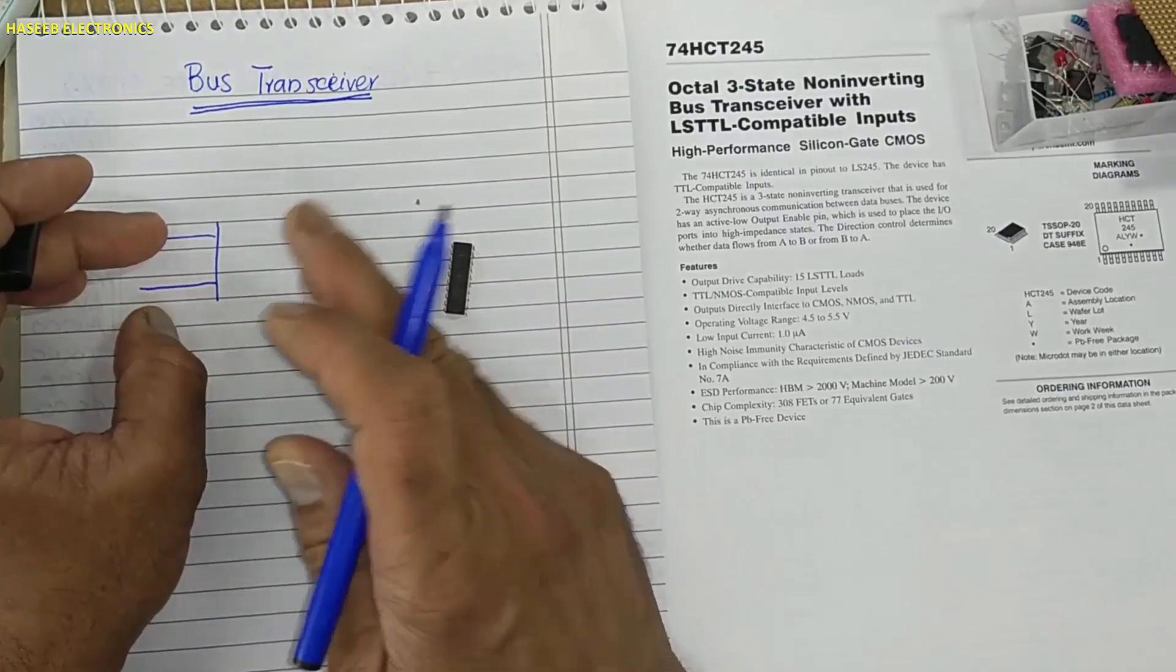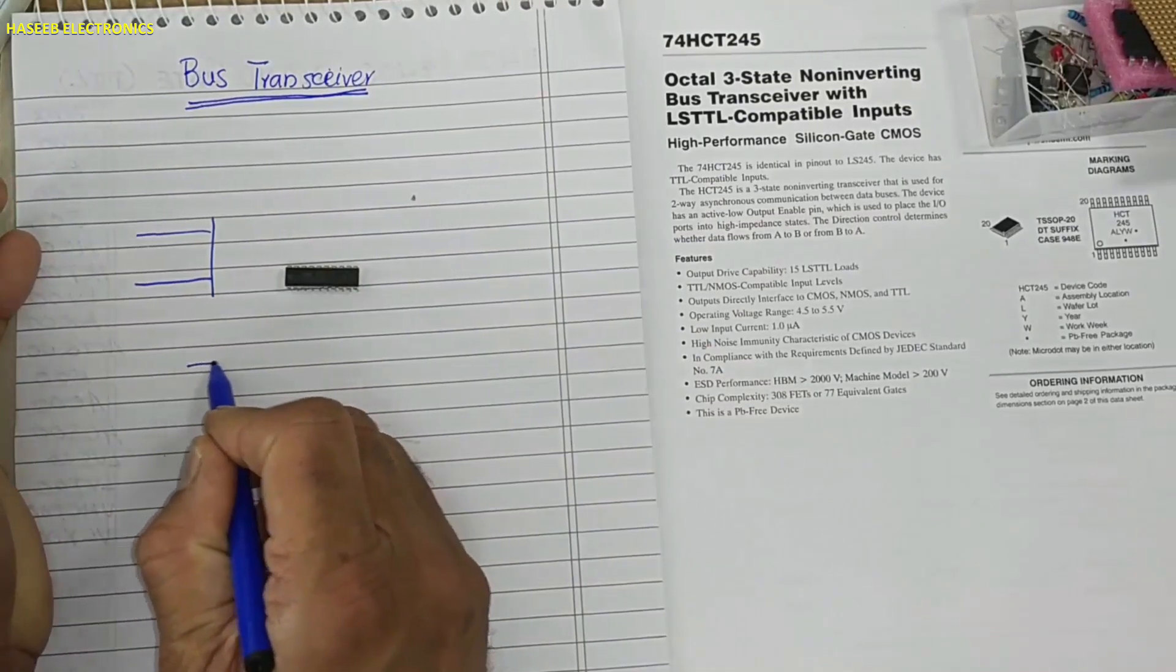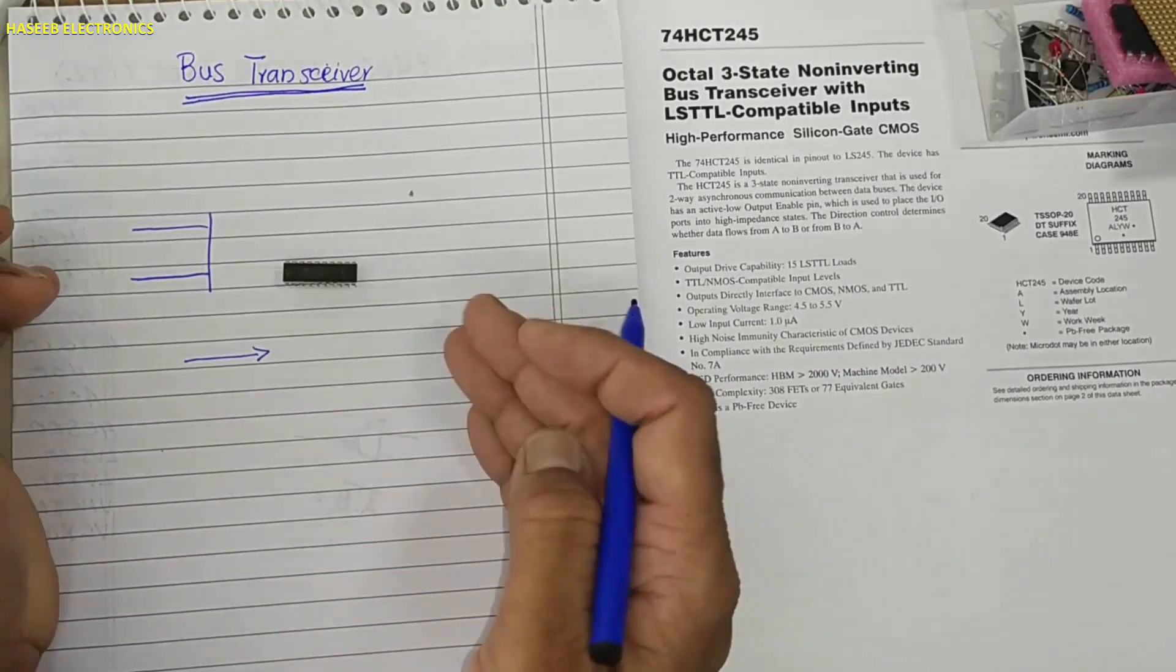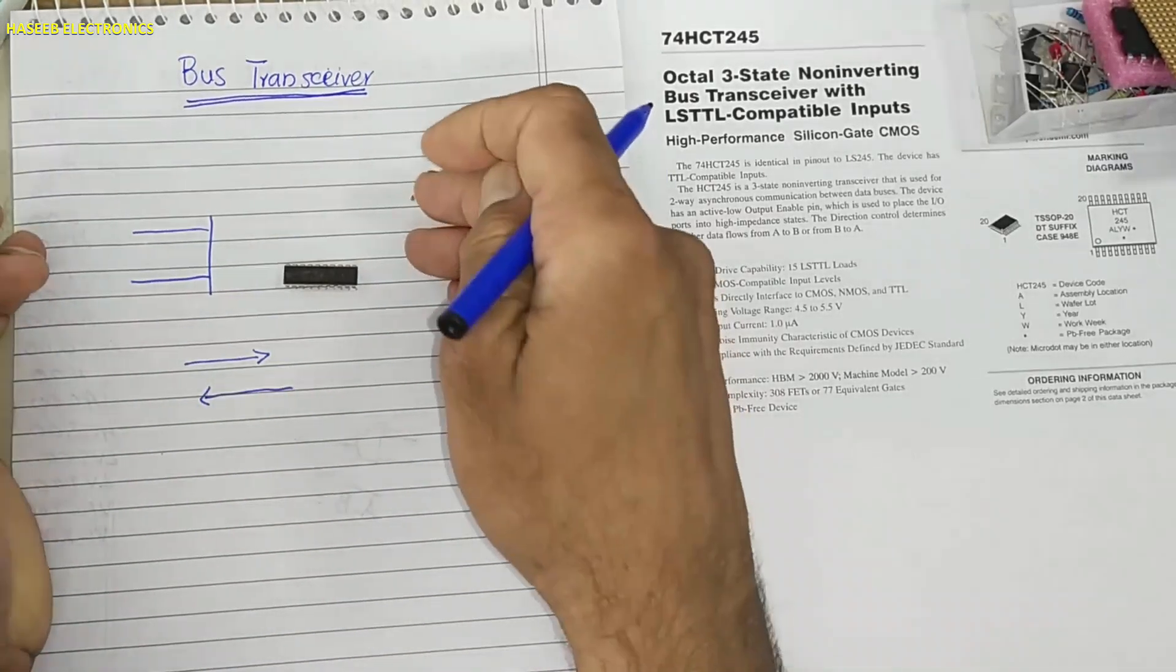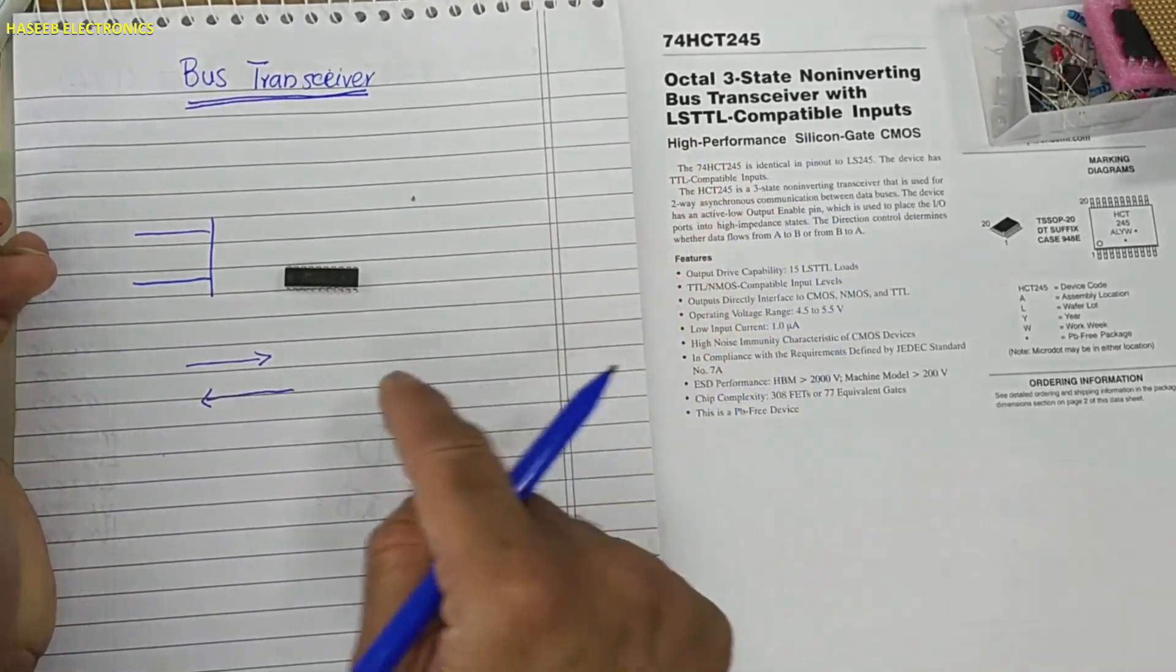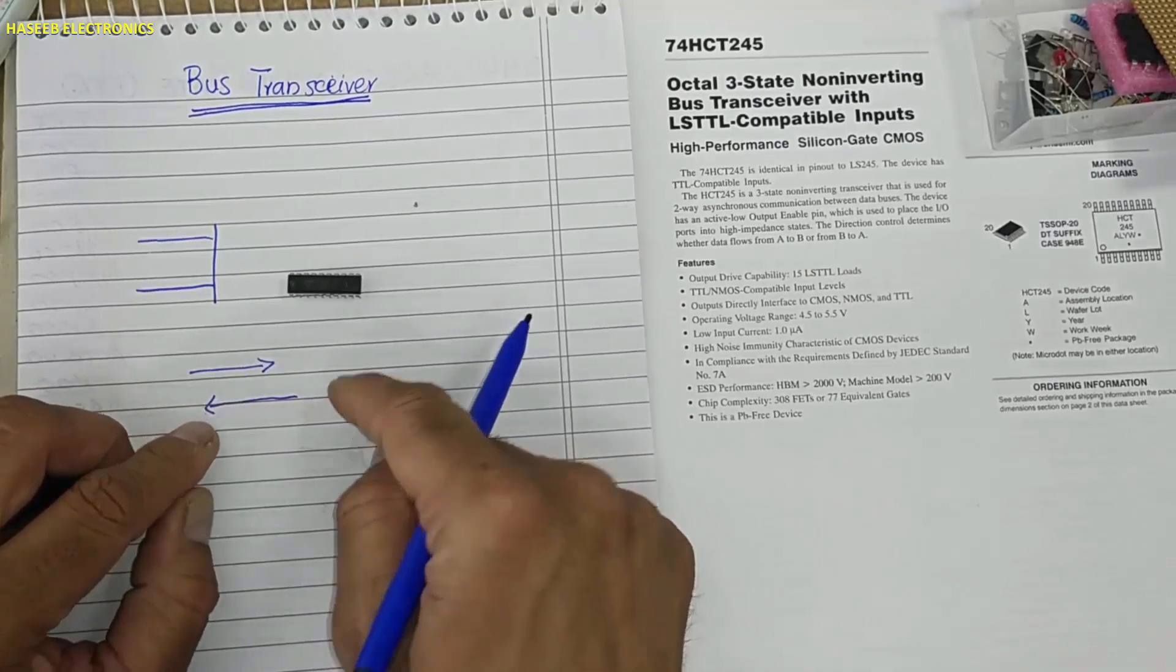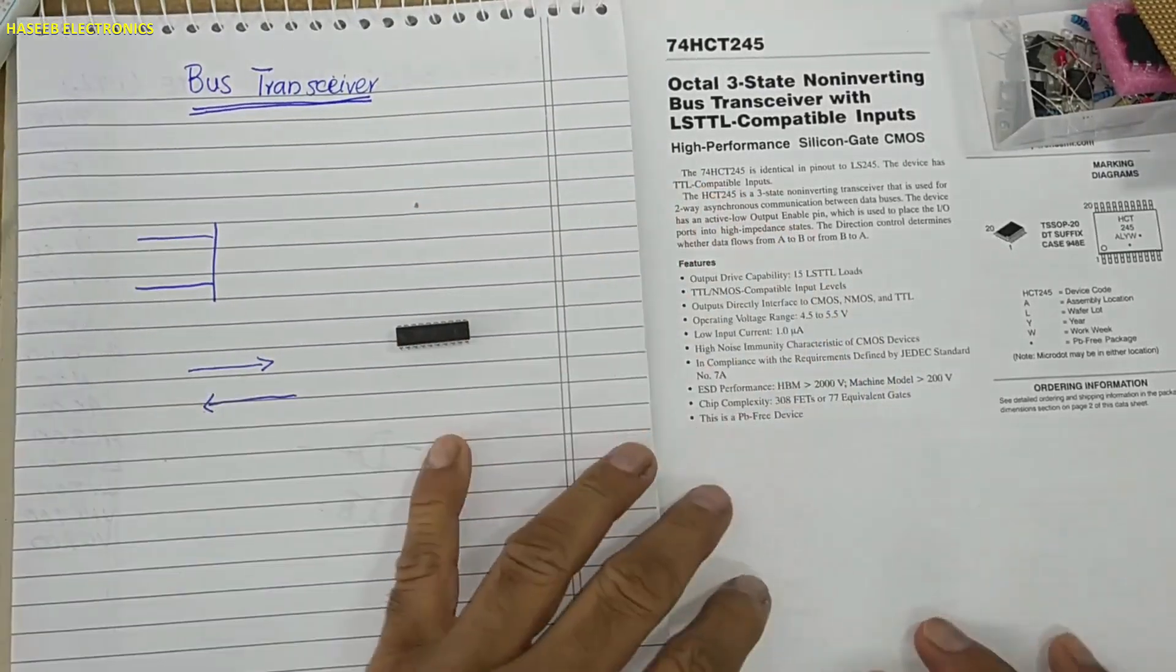So processor is unable to deliver too much current. For that purpose bus drivers, line drivers, transceivers, receivers, these components are used. These transfer data from one end to the second end. It can be called transmitter, driver, buffer. If some component is bringing data to microcontroller from any address location, from any component, from memory device, from any data source, so that will be called receiver. If any component has dual function, it can transmit data or it can receive data, so it will be called transceiver - transmitter plus receiver.